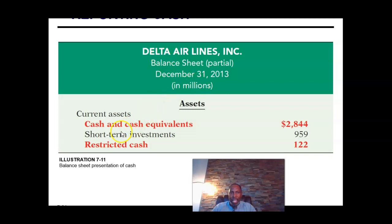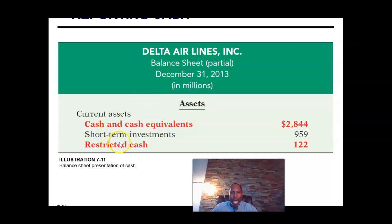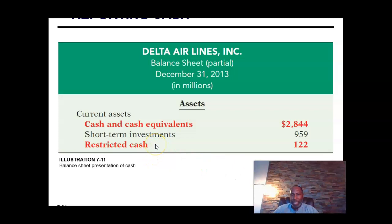Here is a partial balance sheet for Delta Airlines showing their cash and cash equivalents. It also shows their short-term investments — items they do not intend to convert to cash within three months but within less than one year — and they also have restricted cash. In their annual report, they provide additional information as to what item they plan to purchase, build, or develop with it. That information can be found in the annual report in the disclosure note.